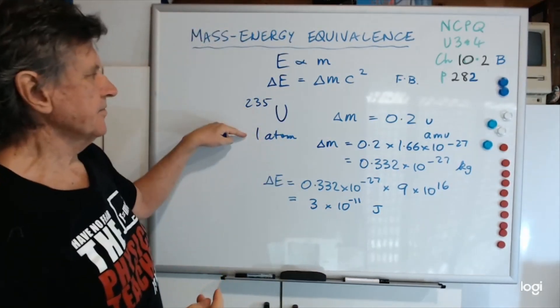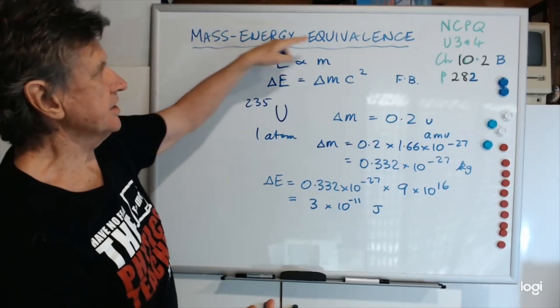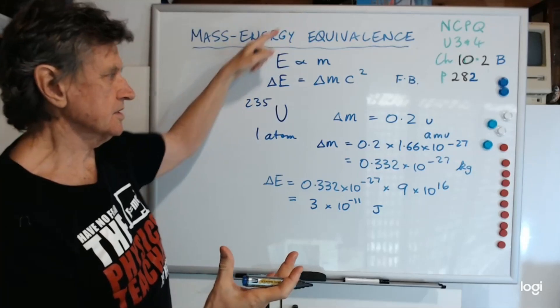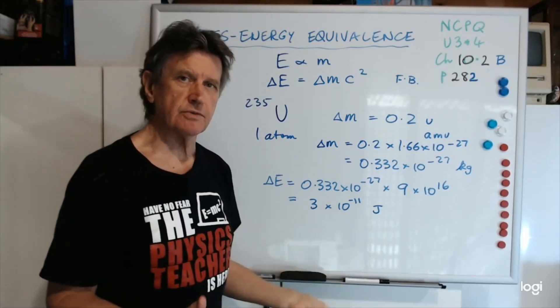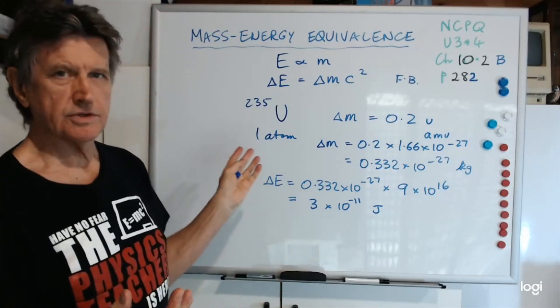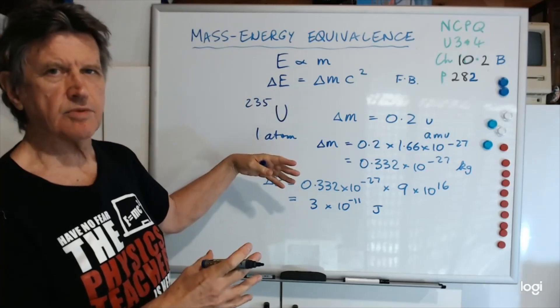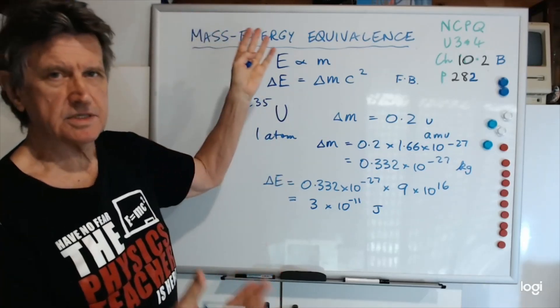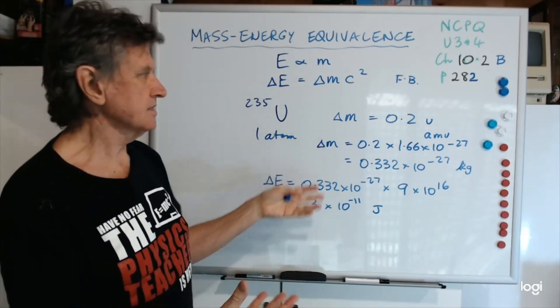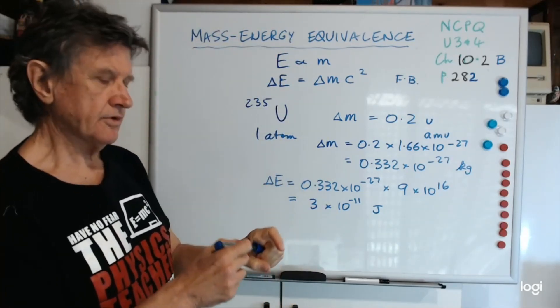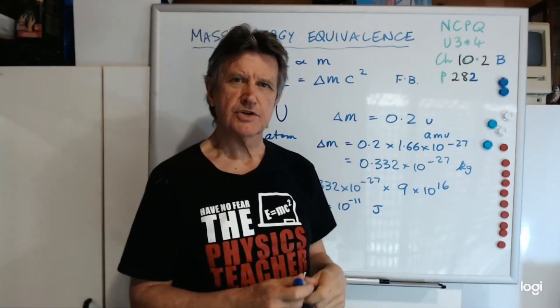So, when one atom of uranium undergoes fission, the mass energy equivalence principle, Einstein's principle, tells you that 3 by 10 to the negative 11 joules of energy will be released. And that's all there is to it. But remember, you may not, you're not expected to do calculations or solve problems. The syllabus doesn't mention it, it just says to know about it, but if you can describe it with a simple example, you'd be sure of your marks. We might leave that there, that's all for today, for this section, thank you.